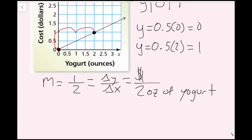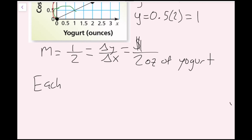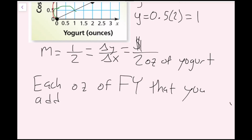And that makes it easier for us to write a sentence. If I add 2 extra ounces of frozen yogurt, it costs $1. This is the exact same thing as saying for every 1 ounce of frozen yogurt, I'm adding 50 cents. So every 1 ounce of frozen yogurt that you add costs 50 cents.